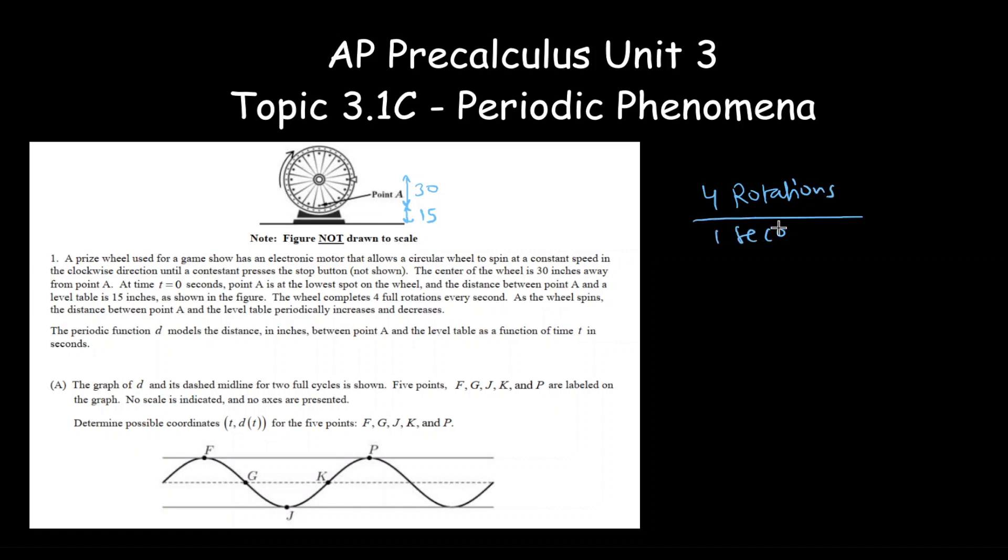So if four rotations take one second, then one rotation obviously will take a quarter second. Four rotations over one second equals one rotation over x seconds. If I cross multiply, then 4x equals 1, so x equals 1 over 4 or 0.25 seconds. That is the time period.